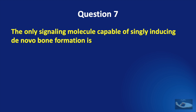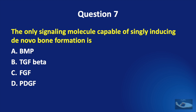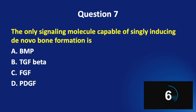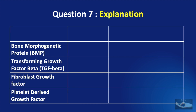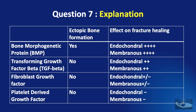Question No. 7. The only signaling molecule capable of singly inducing de novo bone formation is BMP, transforming growth factor beta, fibroblast growth factor, or platelet-derived growth factor? The answer is Bone Morphogenetic Protein (BMP). The four main factors that help in bone healing after fractures are BMP, transforming growth factor beta, fibroblast growth factor, and platelet-derived growth factor. Of these, only BMP has the potential to form ectopic bone or de novo bone. The effect of all these factors on endochondral ossification and membranous ossification decreases from the top to the bottom of the table.